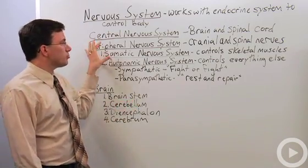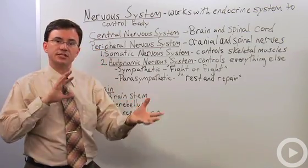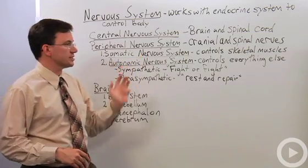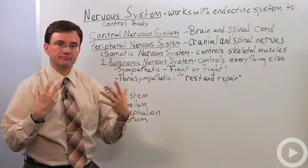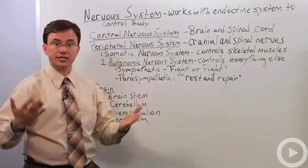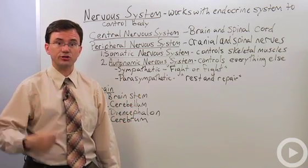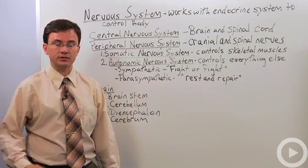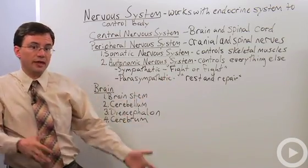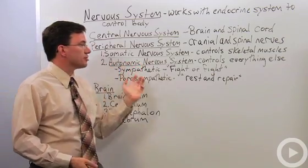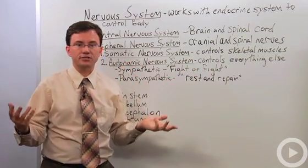Within the peripheral nervous system, there's the somatic nervous system, which is the part that controls your skeletal muscles. It's my somatic nervous system that I activate in order to do this or that. But the autonomic nervous system controls everything else.